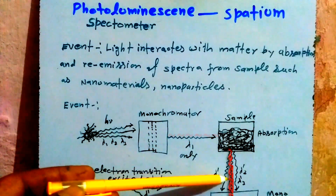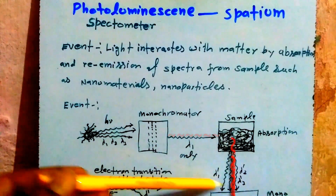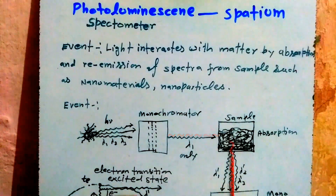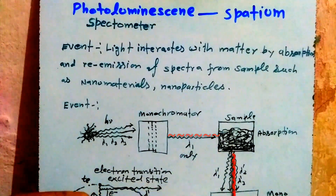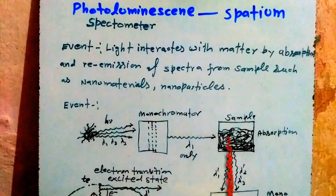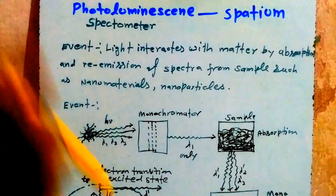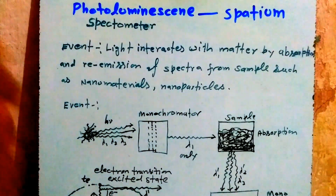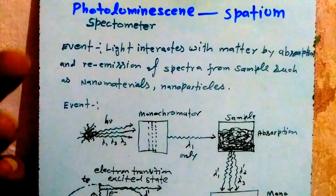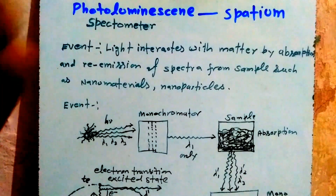The re-emitted spectrum, consisting of many wavelengths, is passed through another monochromator which filters it again. This filtered re-emission spectrum is then detected by a detector, and the intensity and wavelength of this spectrum are recorded by a recorder in the form of a graph. Samples such as zinc oxide and zinc sulfate are examples that can be used.